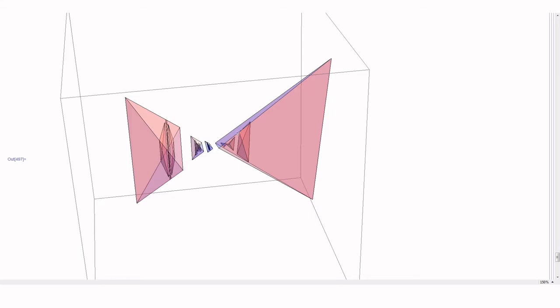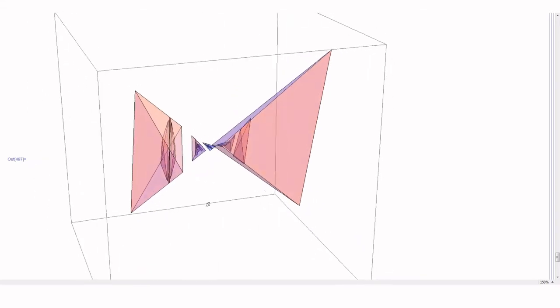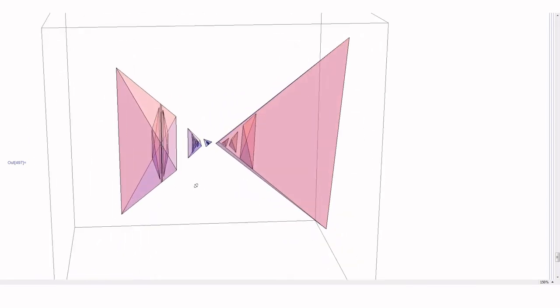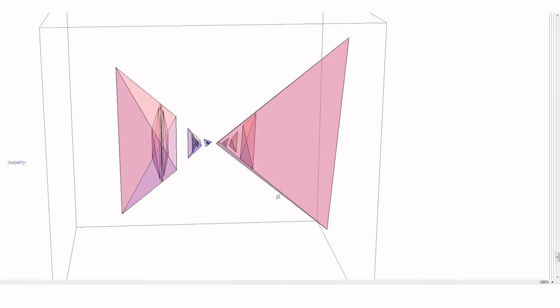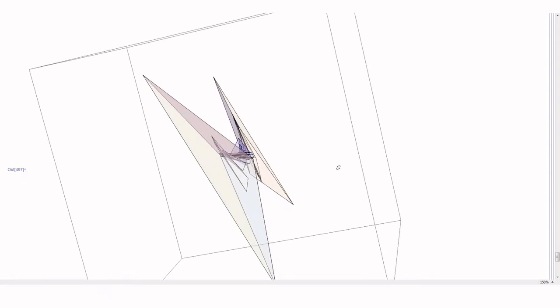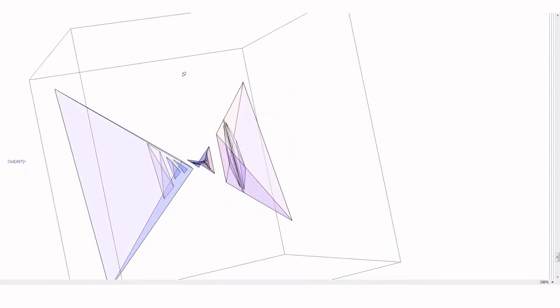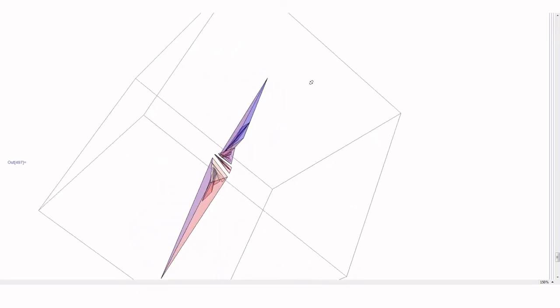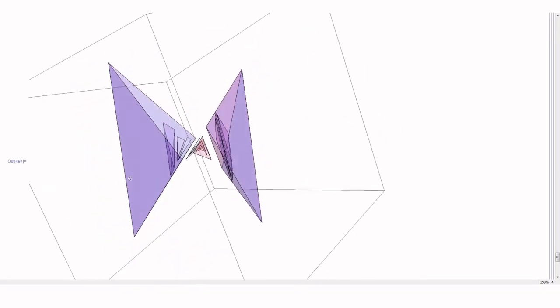The smaller tetrahedra that you see inside are just the images of these 4 by the generators. This is like the first generation of the Schottky group. If you applied length 2 words, you would get smaller tetrahedra inside of each one. Maybe spin around a little bit so you can see the picture better.